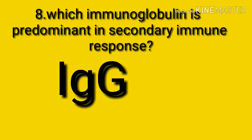IgG can bind pathogens like viruses, bacteria, and fungi, and thereby protect the body against infection and toxins. So IgG is responsible for the secondary immune response and IgM is responsible for the primary immune response.